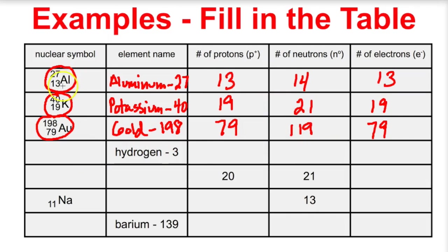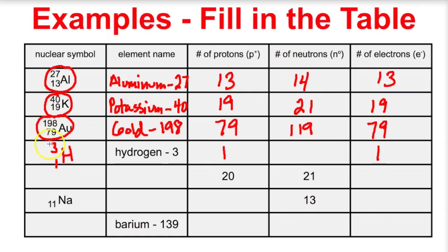Now we have to write the nuclear symbol. It says hydrogen, so we write H. The total mass of the atom is three, so the mass number is three. Because it's hydrogen, look up hydrogen on the periodic table and its atomic number is one. So there's the nuclear symbol: one proton, one electron, and three minus one gives two neutrons.